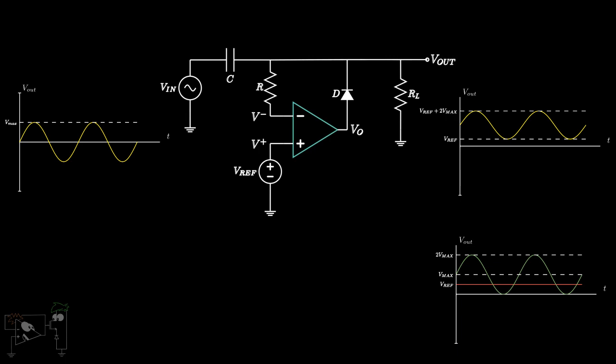For precision clamping, we need CRF to be much lesser than T by 2, where T is the time period of the input frequency and RF is the forward resistance of the diode. The resistor R is used to protect the op-amp against excessive discharge currents from the capacitor, especially when the DC supply voltages are switched off.